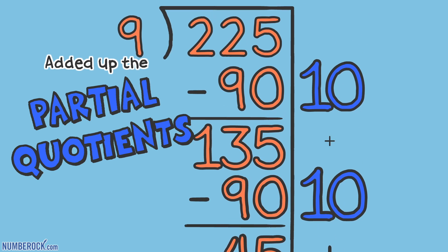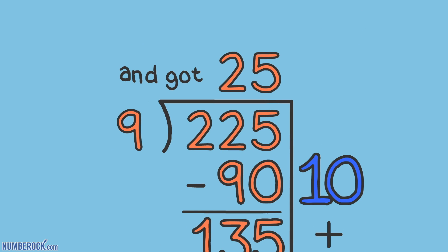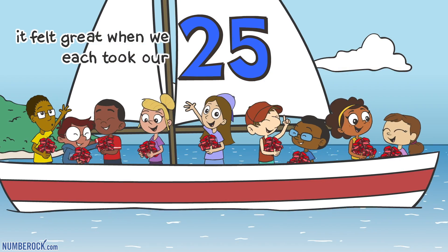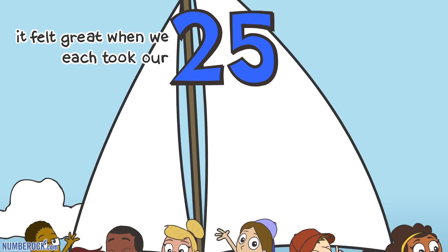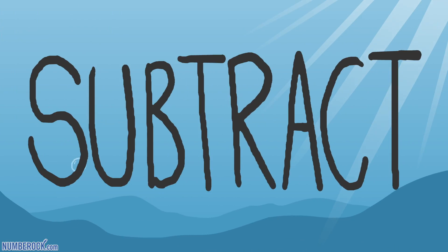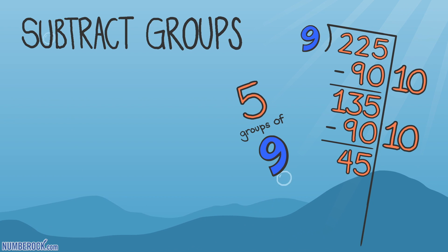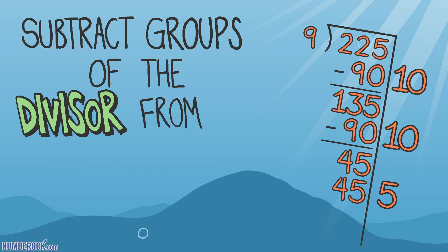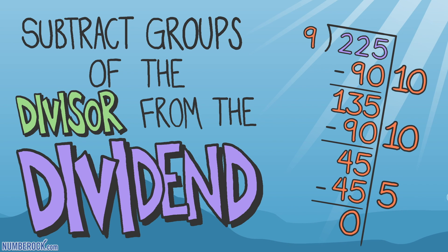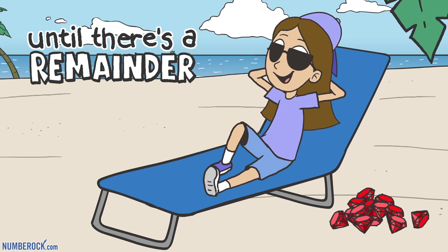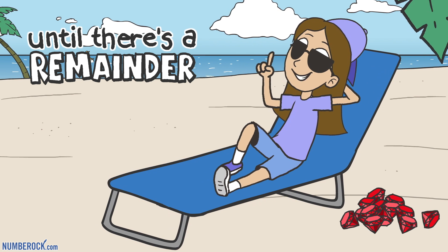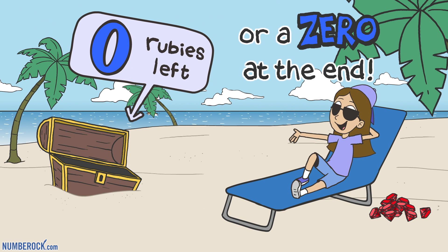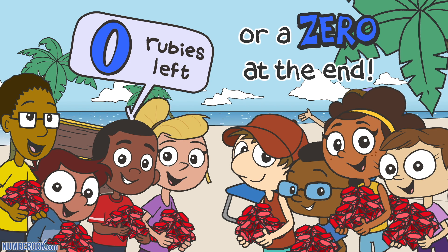Added up the partial quotients and got 25 each. It felt great when we each took our 25 rubies and sailed the seas. Subtract groups of the divisor from the dividend until there's no remainder or a zero at the end.